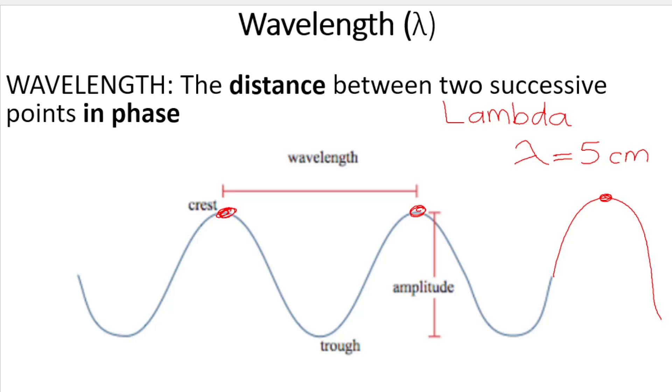Now wavelength, the definition for wavelength: Wavelength is the distance, so we are measuring distance here, so wavelength will often be given in meters or centimeters or some unit similar to that. Over here you can see I've given wavelength in centimeters. So it's the distance between two successive points in phase.